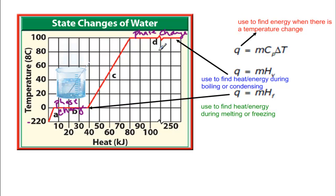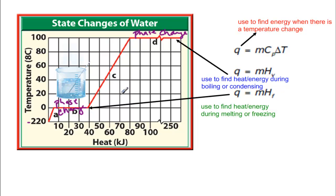A cooling curve is the same thing, just a mirror image. For the formulas: if you have a change in temperature on a slope part, use Q equals mass times specific heat times change in temperature. If you're finding heat during boiling or condensing, use heat of vaporization times mass. And if you're finding heat during melting or freezing, use mass times heat of fusion. These correspond to the different parts of the graph.